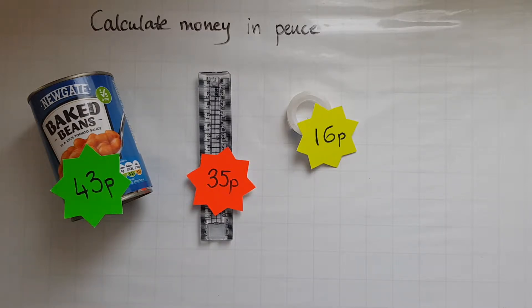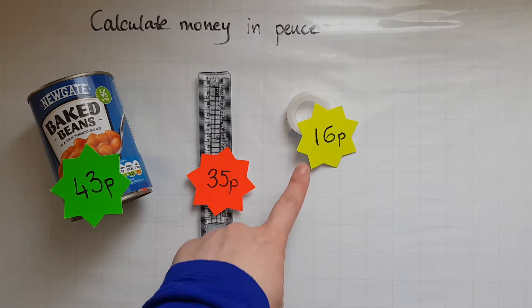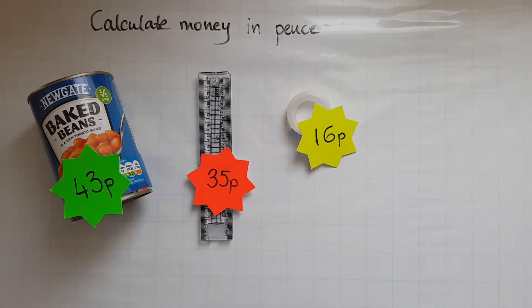I've got three items just like the ones you'd find in a shop: baked beans which cost 43 pence, a ruler costing 35 pence, and sticky tape 16 pence.